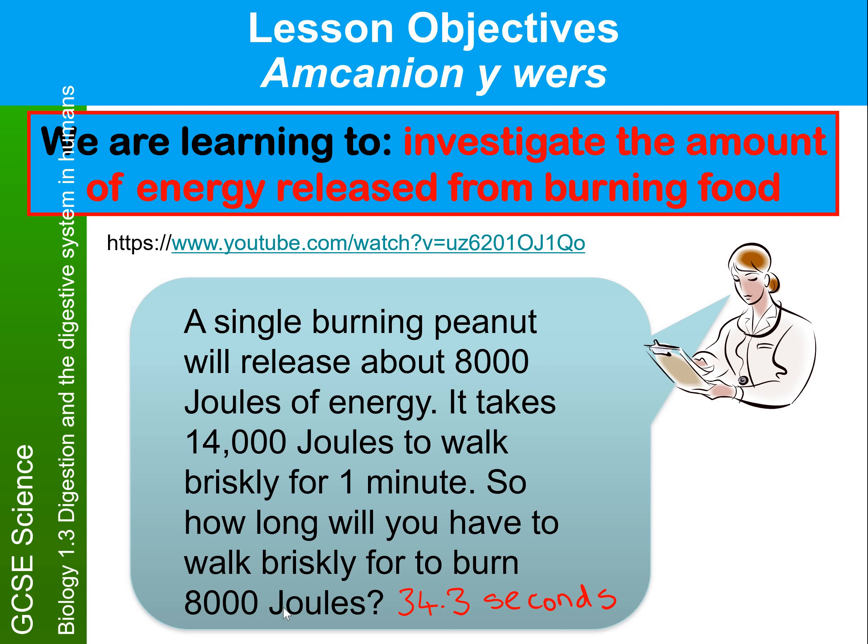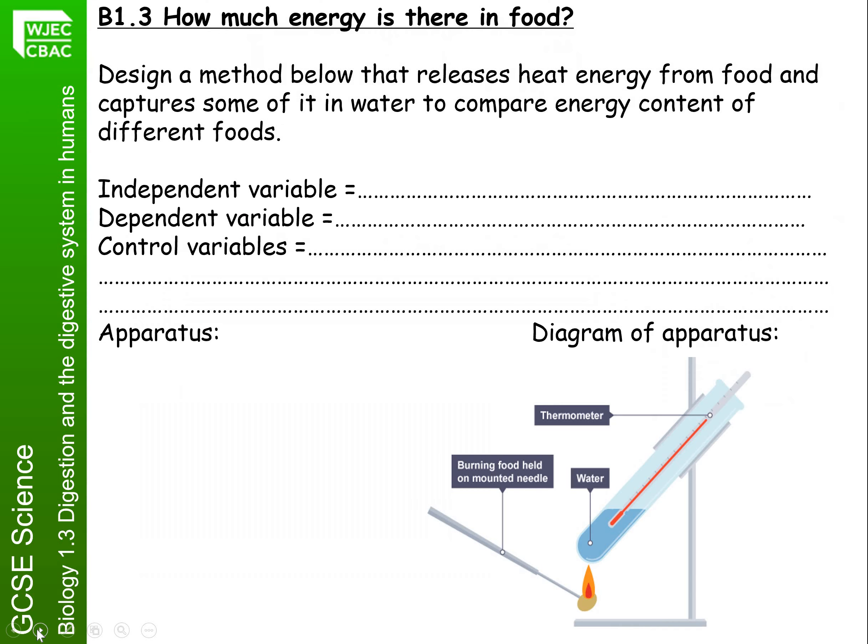In the experiment we're going to do, we are going to actually burn biscuits instead of peanuts. In your booklets, if you turn now to page 21, we're investigating how much energy there is in food. We are going to be comparing the amount of energy released from a low-fat biscuit with a full-fat biscuit. Our investigation is going to be about capturing the heat energy that is released as we burn the biscuits to compare — obviously, the more heat energy released from the biscuit, the more energy is inside it.